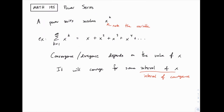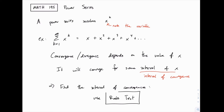When it comes to finding the interval of convergence, the nice thing is that we only have to worry about one test: we're always going to use the ratio test. If you remember, the ratio test is useful for things involving powers of k, so when we see a power series, that's why the ratio test comes in handy. So let me show you with this simple example how we can find the interval of convergence.